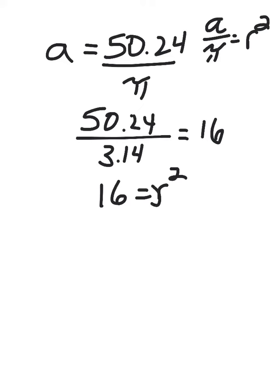Now, you're not done yet, because 16 actually equals r squared. You want r. So to get rid of the r squared, you take the square root of each side. You get 4 equals r. Now we're set.